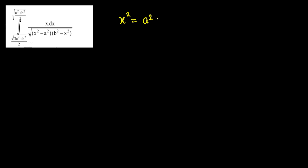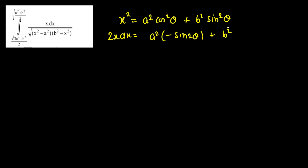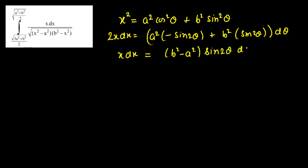When we have root over (x² − a²) multiplied by (b² − x²), we substitute x² = a²cos²θ + b²sin²θ. The range of this substitution will match the domain. Now finding the differential: 2x dx = (−a² sin2θ + b² sin2θ) dθ, so x dx = (b² − a²) sin2θ dθ / 2.